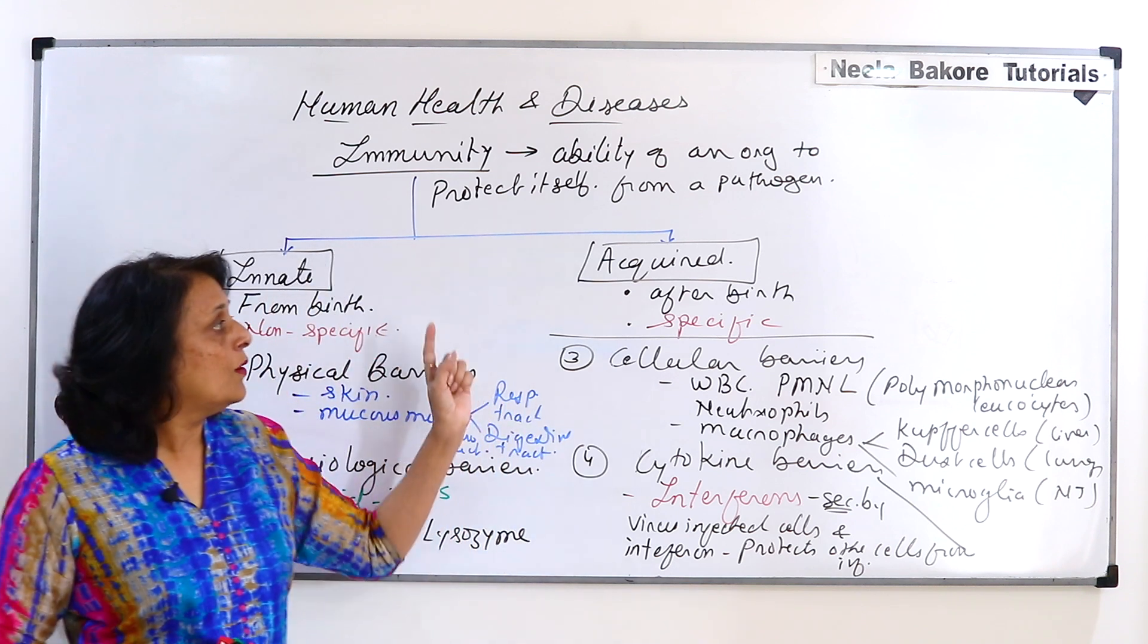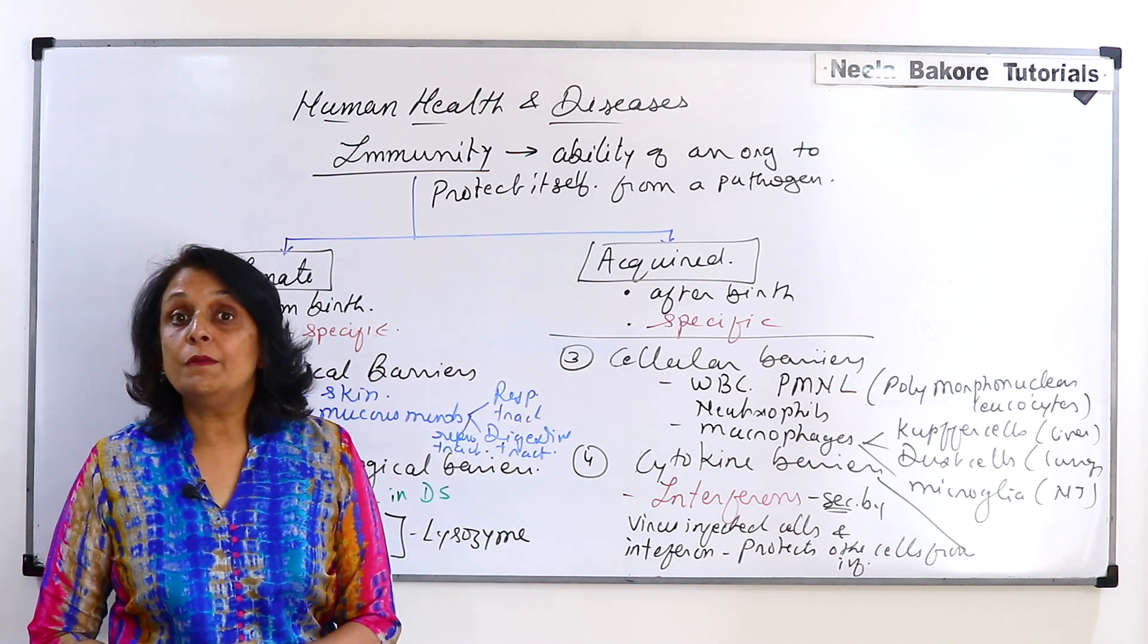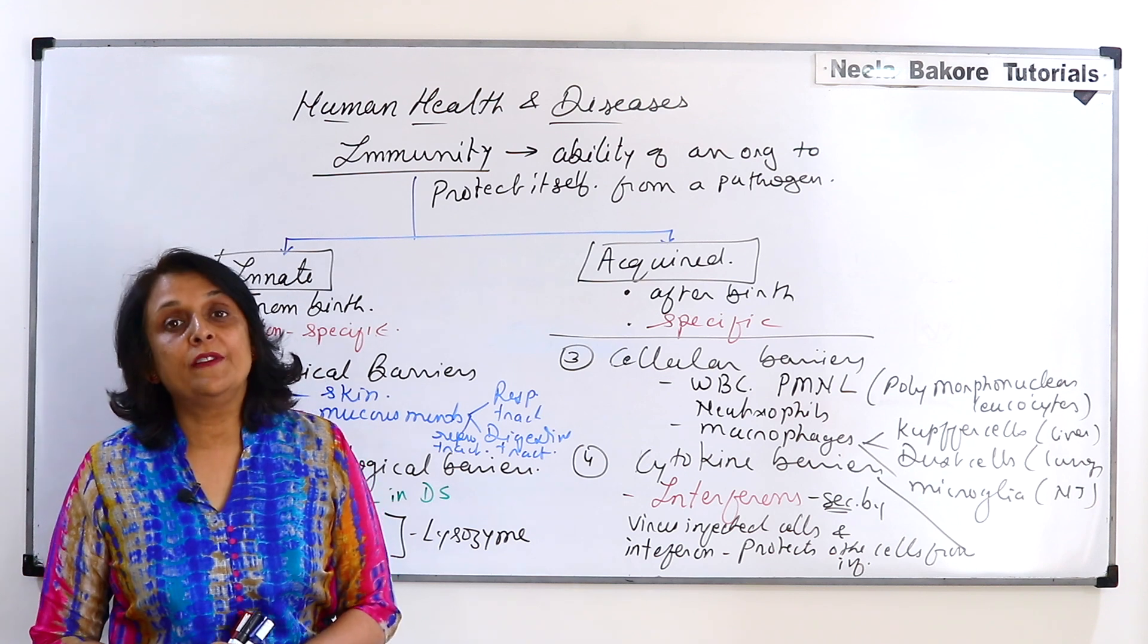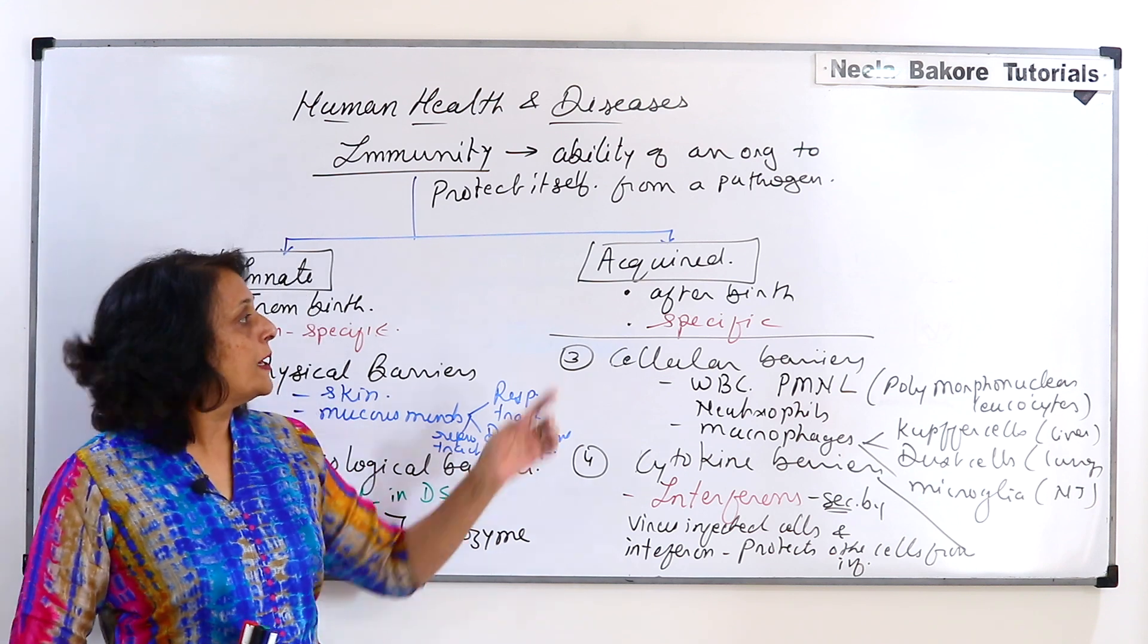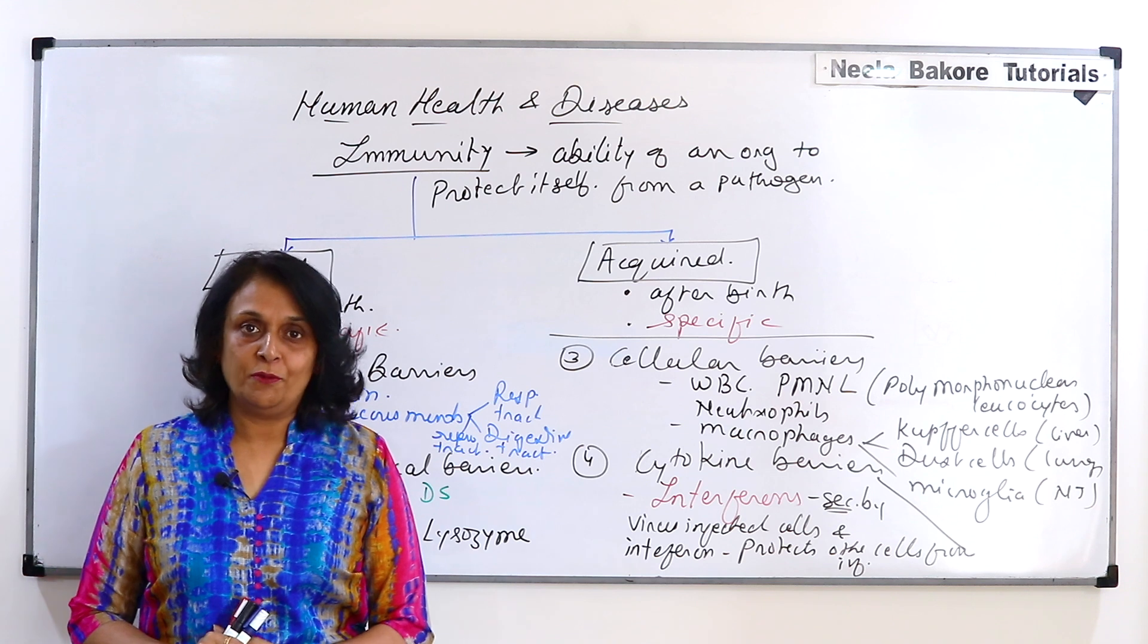And now the next one is acquired, that means the immunity which we gain after we are born. So in the next part we will talk about acquired immunity.